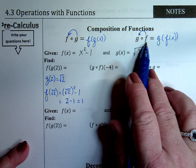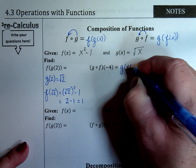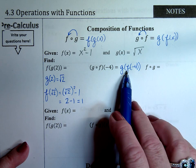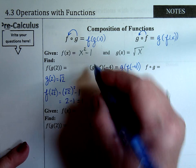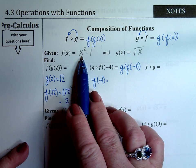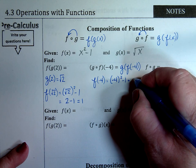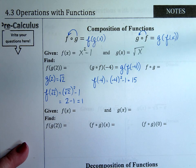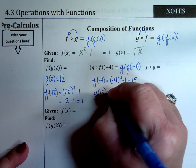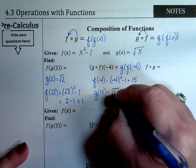Goff is the same thing as G of F of x. Find G of F of negative 4: job one is to figure out what F of negative 4 is. Take negative 4 and plug it in — negative 4 squared minus 1 is 16 minus 1, which is 15. But you're not done, because now you take that answer and plug it into the G function. G of 15 is the square root of 15, and you're done.